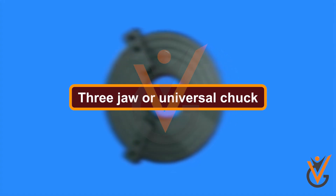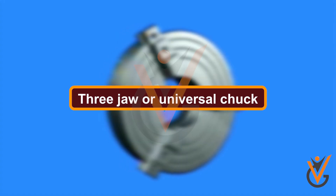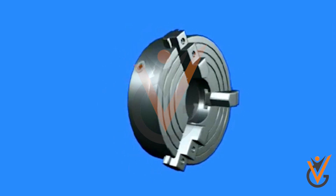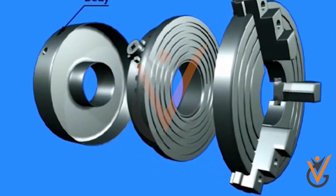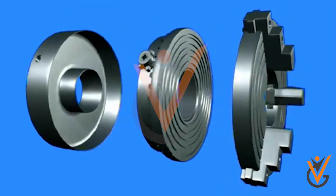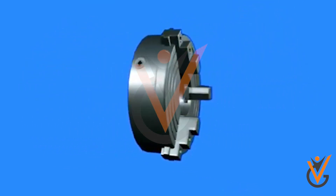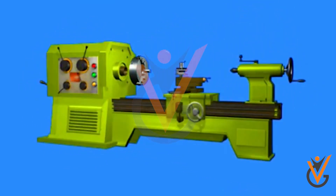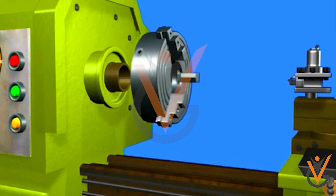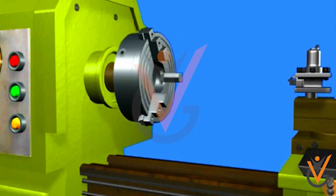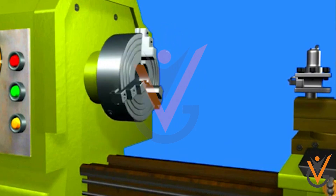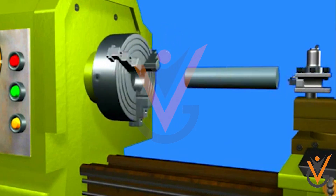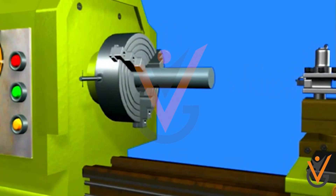Three-jaw or universal chuck. It consists of three jaws that move simultaneously by turning a key, and the workpiece automatically remains in the center of the chuck opening. It is used for holding round, hexagonal bar or other symmetric work.